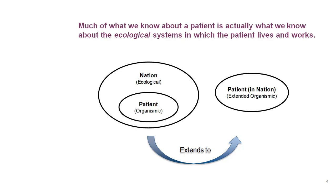Likewise, we can talk about the extended system concept beyond the systems we're directly dealing with. The patient as an organismic system exists within a national ecology or nation system. A patient in the United Kingdom is very different from one in France or the United States — not because the patients themselves differ, but because the national health systems in which we're discussing them are different. 'Patient in nation' might be how you would model an extended organismic system, capturing important variables about how that patient fits into the national healthcare system.